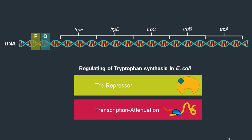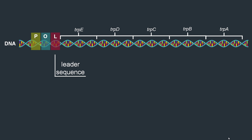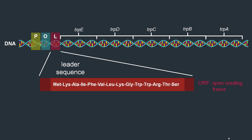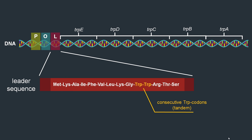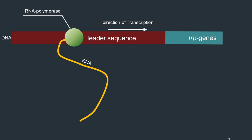The second mechanism regulating tryptophan synthesis is attenuation. For transcription attenuation, a third DNA sequence in front of the tryptophan genes is important — the leader sequence. This leader sequence contains a small open reading frame coding for a small peptide, called the leader peptide. The leader sequence is first transcribed into an RNA called the attenuator RNA, and later translated into the leader peptide. A characteristic feature of this coding region is two tryptophan codons in a row — consecutive or tandem codons — which heavily influence the translation speed of the leader sequence.